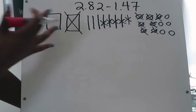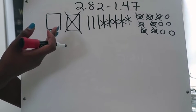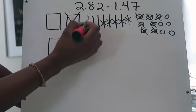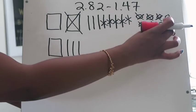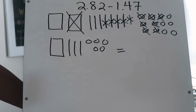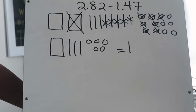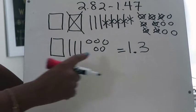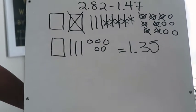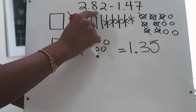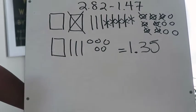Now I need to look at what's left of my quick picture and figure out the answer. I have one whole, I have three tenths, and I have five hundredths left. I'll represent that as a decimal: one in the ones place, a decimal point, three in the tenths place, and five in the hundredths place. This tells me that when I subtract one and forty-seven hundredths from two and eighty-two hundredths, my answer is one and thirty-five hundredths.